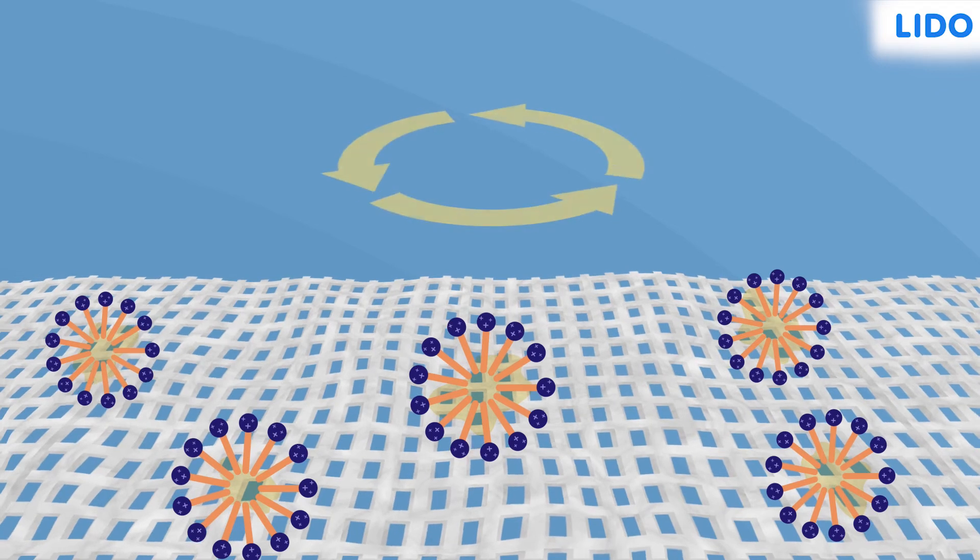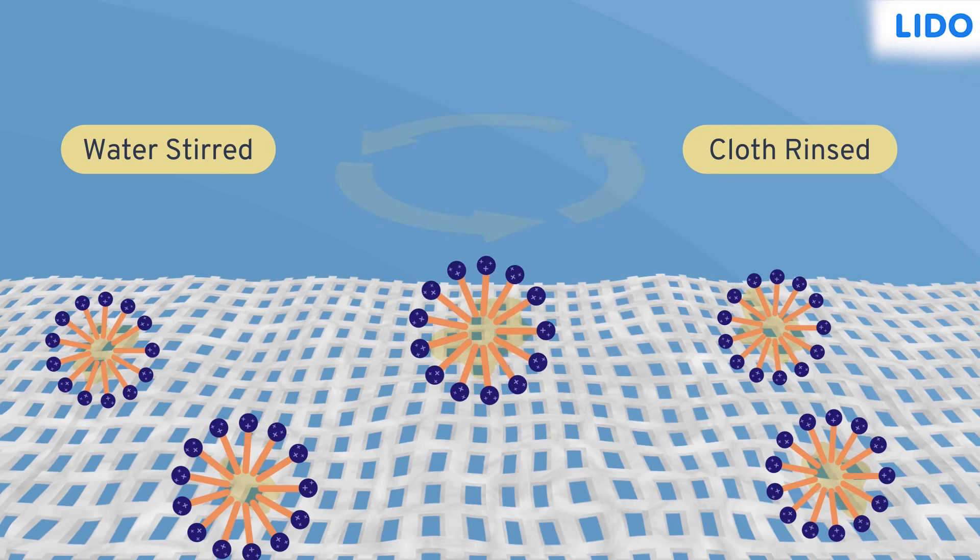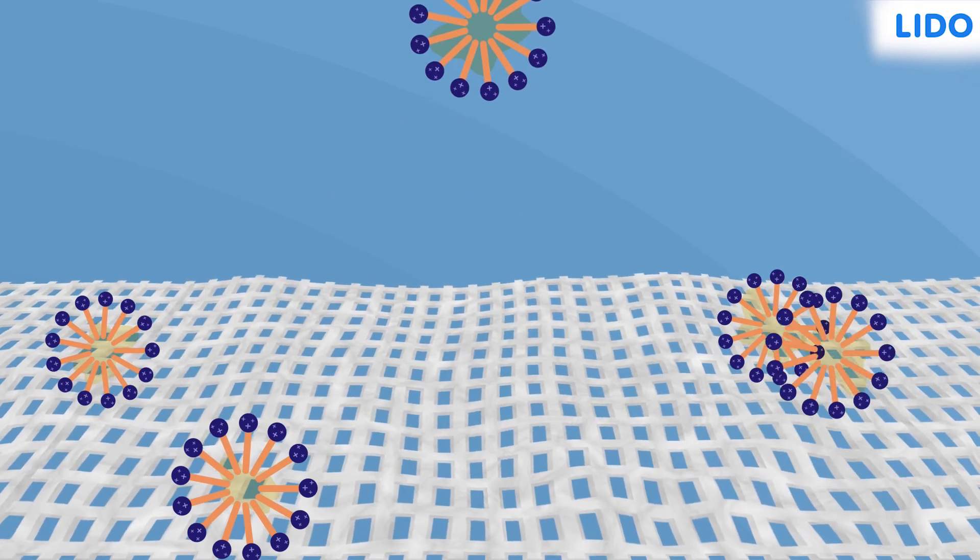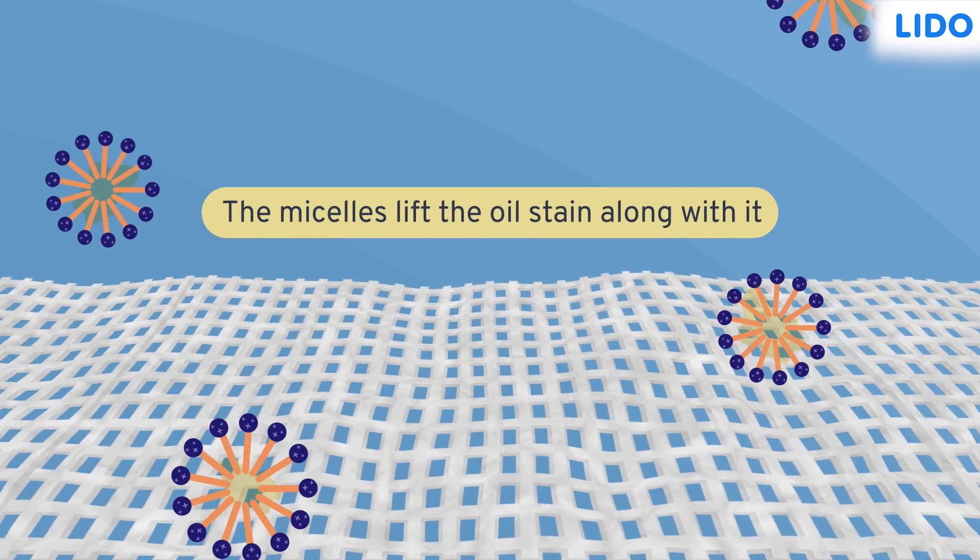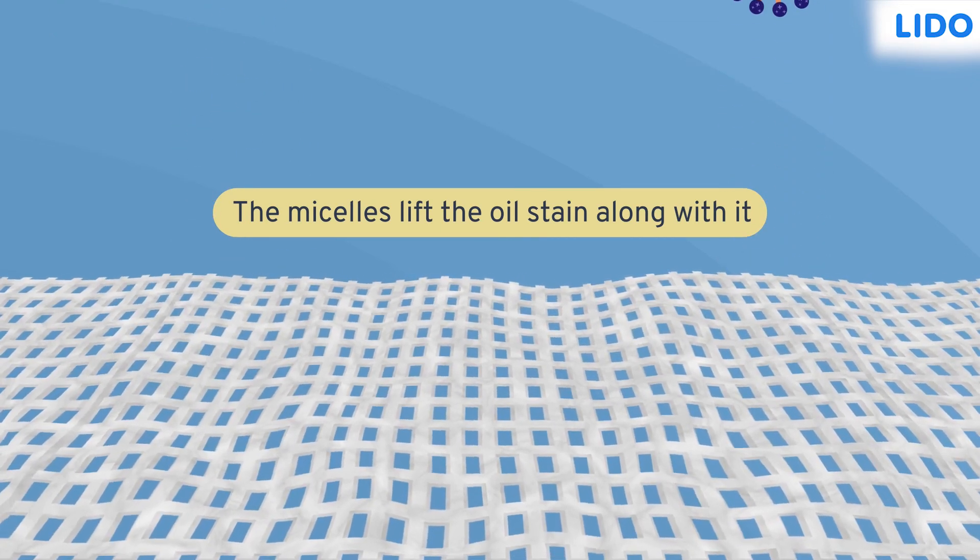Now, when the water is stirred and the cloth is rinsed, these micelles are lifted off. The stain too is loosened. Do you know what's the good part about this? The micelles lift the oil stain along with it and the cloth is all clean.